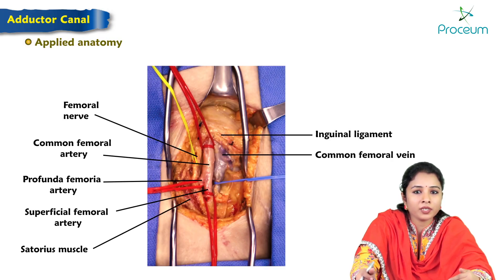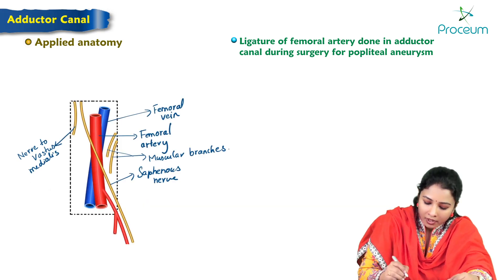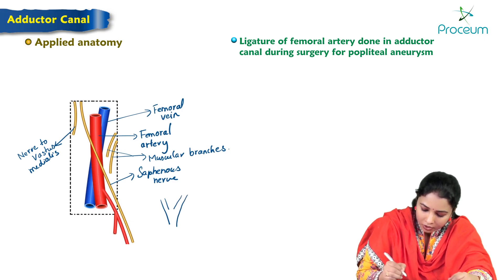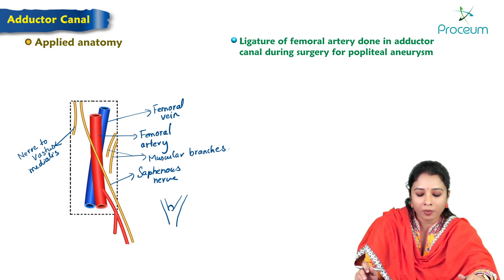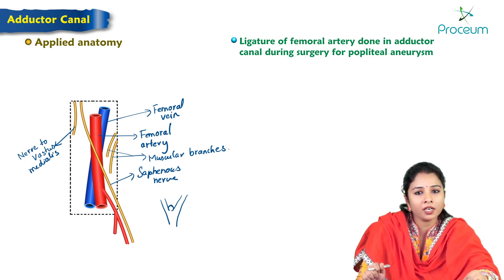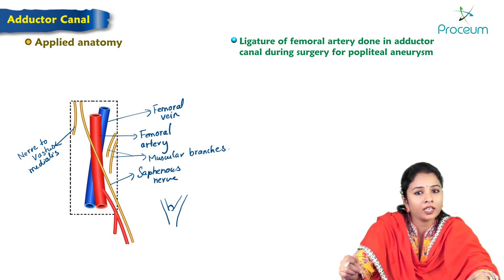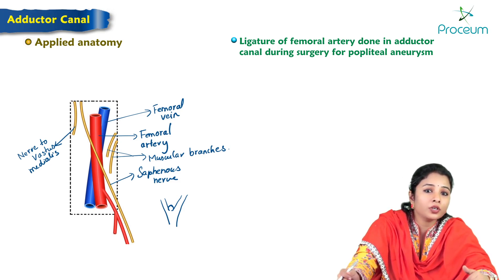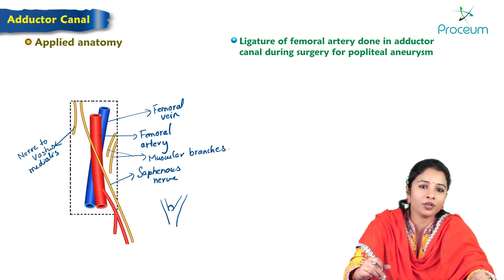The applied aspect: ligation of the femoral artery is done in the adductor canal during surgery for popliteal aneurysm. An aneurysm occurs when there is weakening of the wall of a blood vessel, usually at a site of branching, forming a balloon-like outpouching. To correct a popliteal aneurysm along the popliteal artery, ligation of the femoral artery is performed in the adductor canal to prevent hemorrhage.